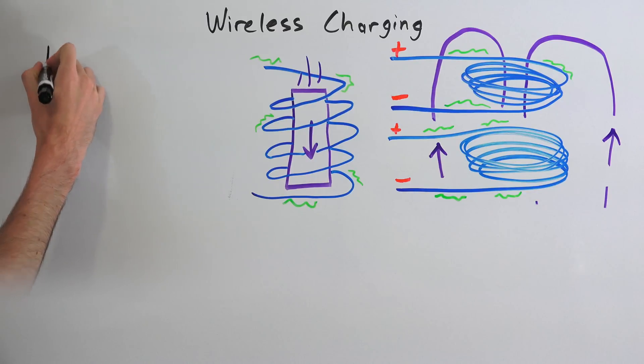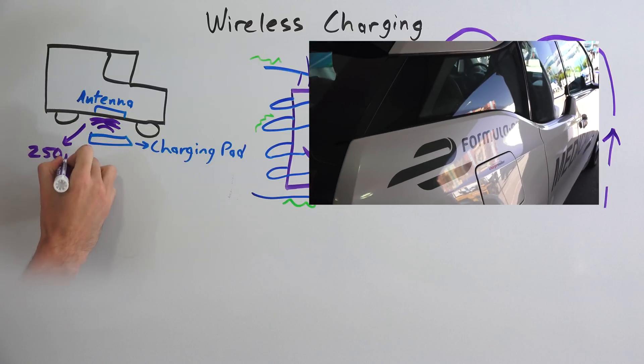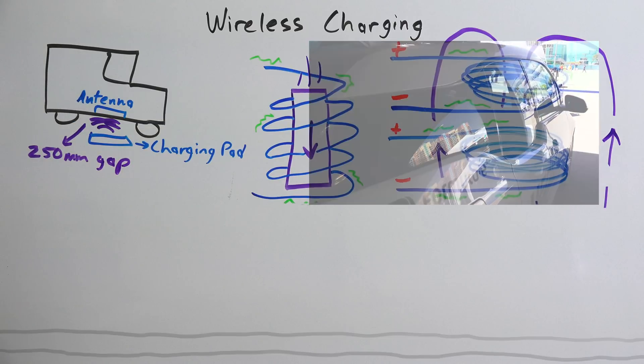Traditionally, one of the largest problems with inductive charging is that the distance between the charging pad and the receiving antenna must be very close, but Qualcomm has managed to transmit this energy at a gap of up to 250 millimeters. This is greater than the ground clearance of most cars and SUVs, meaning it could effectively charge the vast majority of electric vehicles.